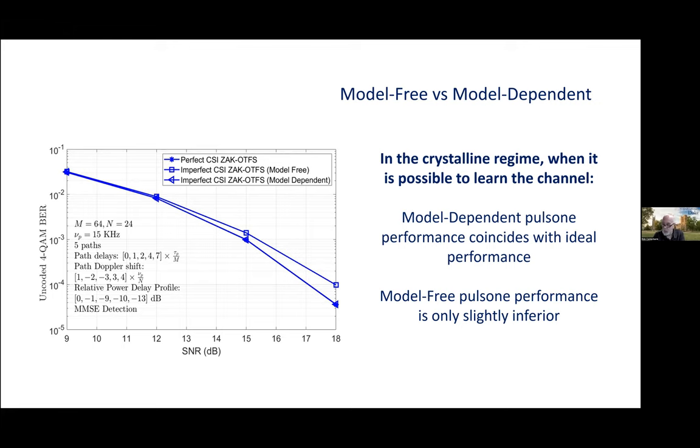So, M is 64, N is 16, B is 960 kilohertz, T is 1.6 milliseconds, and the Doppler period nu_p is 15 kilohertz. So, we see that pulsones are able to resolve the channel, and the performance matches that of perfect CSI.